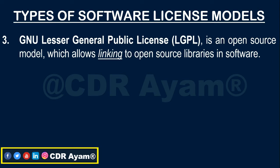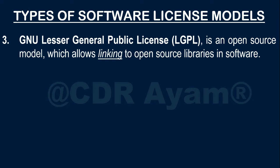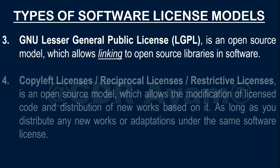The Lesser General Public License (LGPL) is another type of software license which allows you to link to open source libraries in your software. If you simply compile or link an LGPL library with your own code, you can release your software application under any license that you want, even as a proprietary license. But if you modify the library or copy part of it into your own code, you would have to release your application under similar terms as the LGPL.